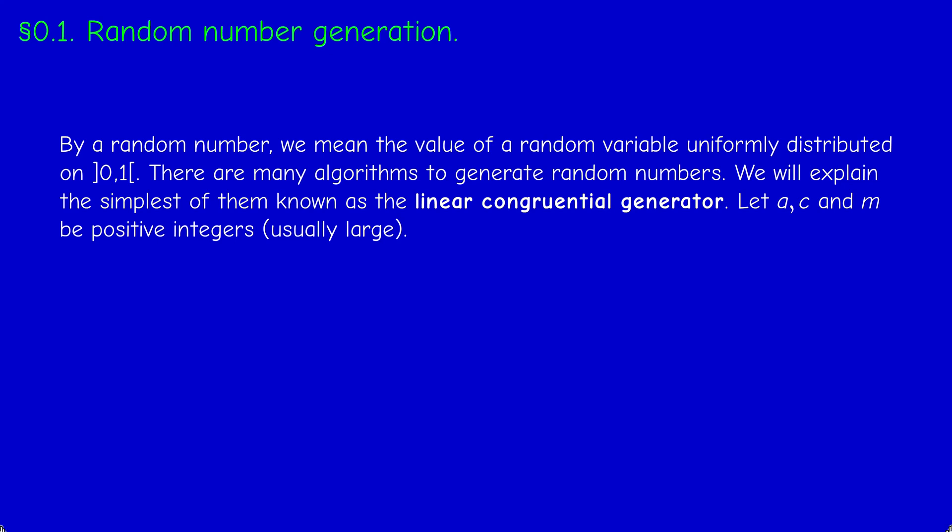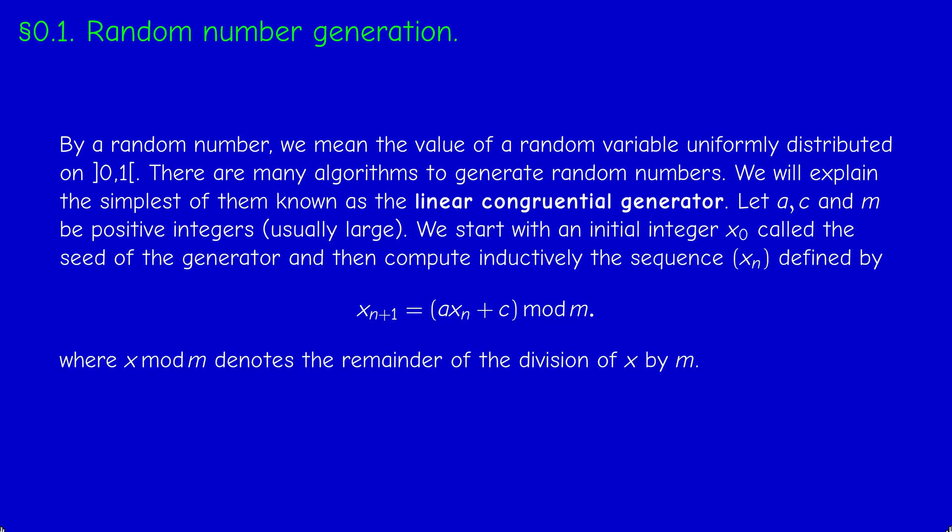Choose positive integers A, C, M — these are the constants or parameters of the generator. To generate a random number between 0 and 1, we start with an initial integer called the seed. Then we iterate: if we know x₀, we compute x₁ by multiplying x₀ by A, adding C, and taking the remainder of the division by M. The values xₙ lie between 0 and M−1, so dividing by M gives the random number.